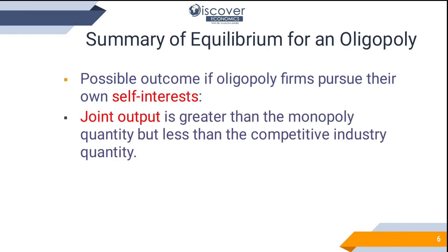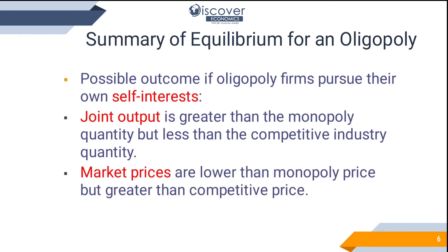Joint output is greater than monopoly but less than competitive industry output. If a single firm is working, quantities will be low; if there is heavy competition, quantities will be very high. In oligopoly, neither quantity is very low nor very high — you are in between monopoly and perfect competition. Market prices are lower than monopoly price but greater than competitive price.